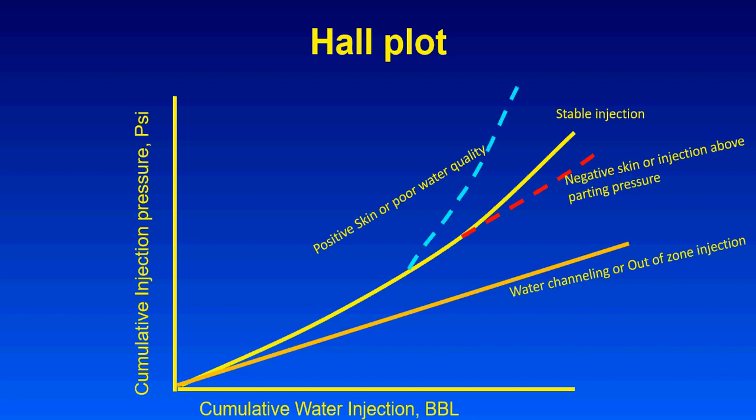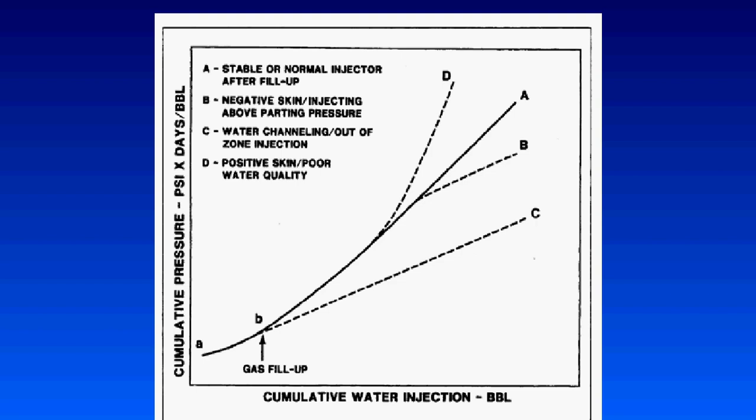On the other hand, you can have a positive skin. In this case you see a very sharp increase in injection pressure and a reduced water injection rate. You have to monitor the skin and perform acid stimulation or another remedial action depending on the case. This is the typical Hall plot interpretation summarized from the textbook.